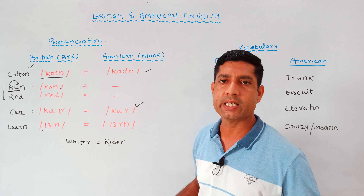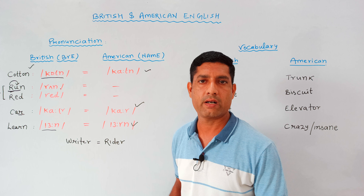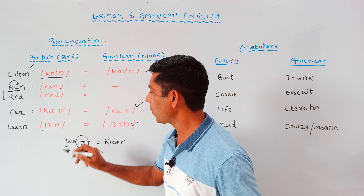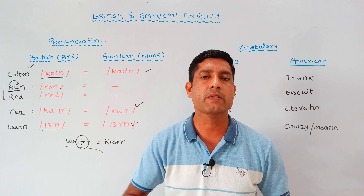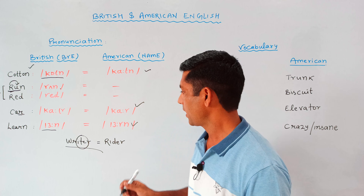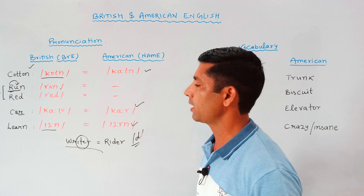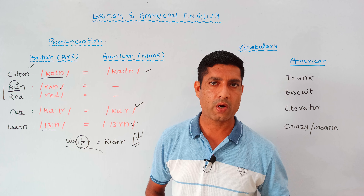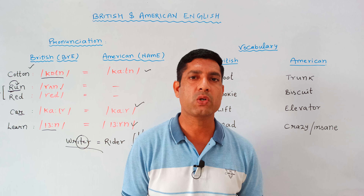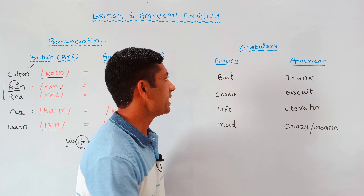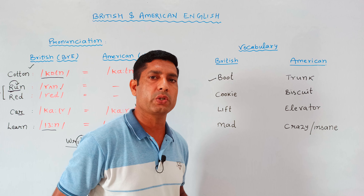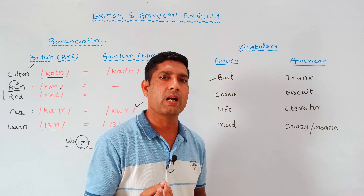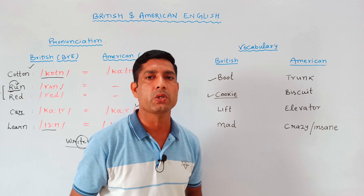Point number two: in British English, the consonant R is pronounced only when it comes before a vowel sound. In all other cases — when R appears in the middle or at the end of a word — it is silent. For example, 'run' and 'red' are pronounced with R, but 'car' is pronounced without the final R. In American English, R is always pronounced whether it is at the beginning, middle, or end of a word — so it's 'car' and 'learn' with a clear R sound.